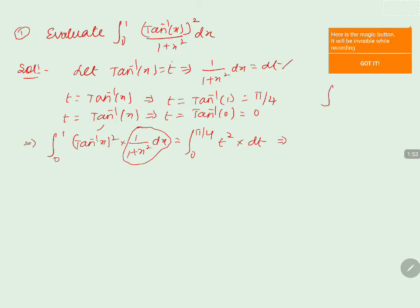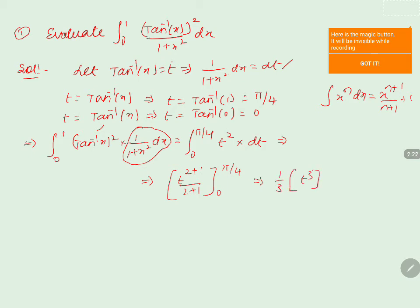This is in the form of the integral of x to the power of n dx. The formula is x to the power of n plus 1 by n plus 1 plus c. So this becomes t to the power of 2 plus 1 by 2 plus 1, evaluated from 0 to pi by 4. That gives 1 by 3 into t cube, with lower limit 0 and upper limit pi by 4.